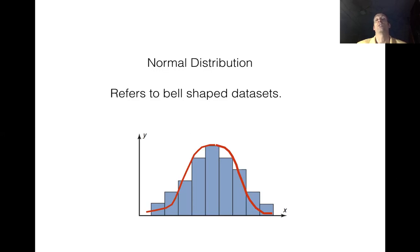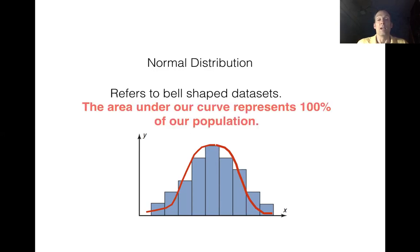Think about how much work it took to get a frequency distribution and then a histogram done — that's a lot of energy. If you can make a line-fitting curve to represent your data population, it's going to be much easier. One of the most important things to remember is that the curve is on the outline of a histogram, and the histogram represents 100% of our population. So the area under the curve represents 100% of our population — and that one sentence is enough to drive almost all the probability we're going to work with in this chapter.